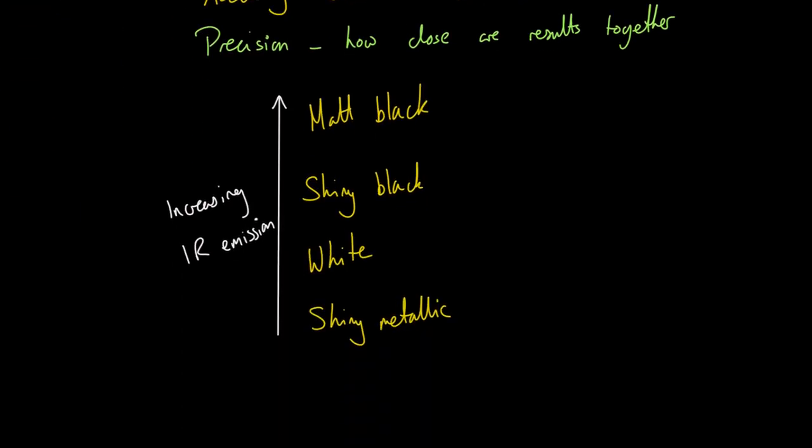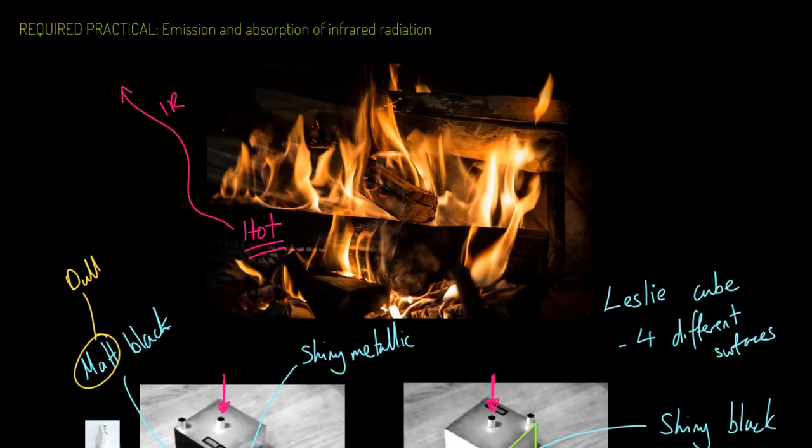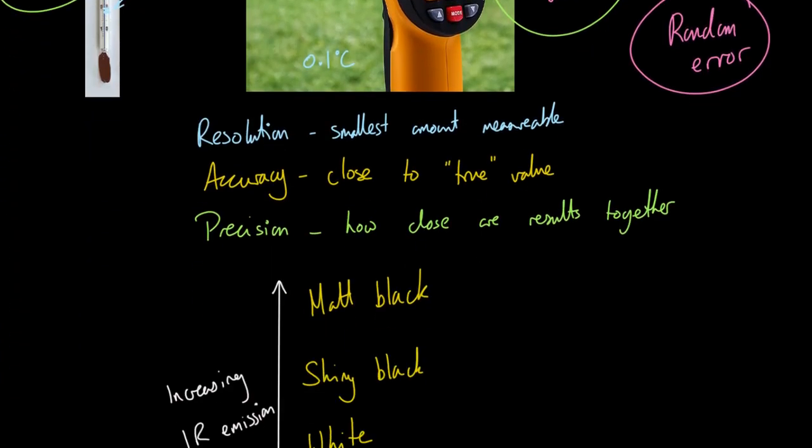So that is the experiment on how you look into emission. But how about absorption, how about soaking up infrared? Well, for this you are going to need some different equipment. So this here is a heater, so it's going to be an electric heater of some kind, something that gives out that infrared radiation.